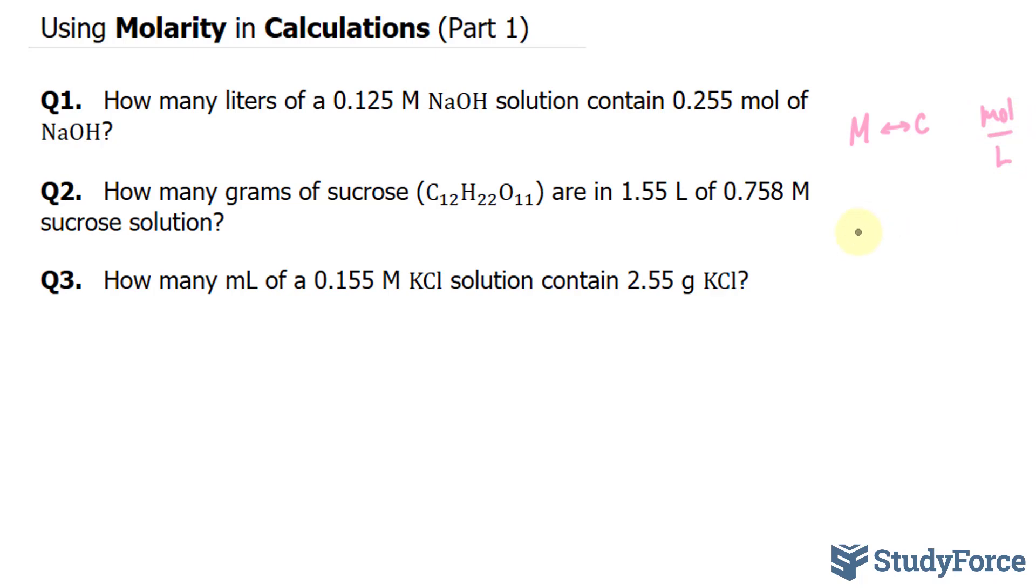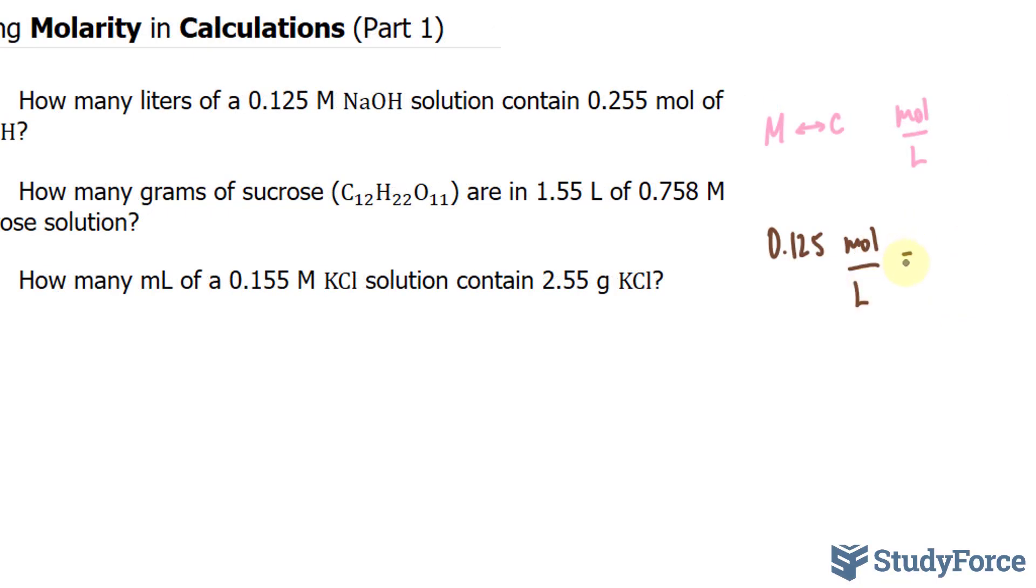That being said, we're told that there is 0.125 moles per liter of sodium hydroxide. To get to this, you take the number of moles and divide it by the volume. We have the number of moles, it's 0.255. So I'm going to replace this with 0.255, and so my calculation has become 0.125 is equal to 0.255 over V.